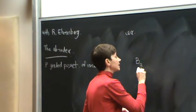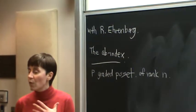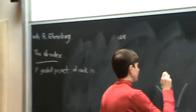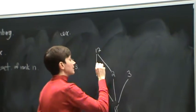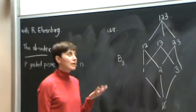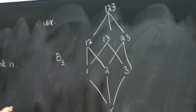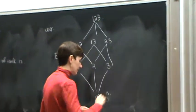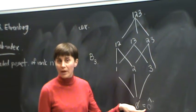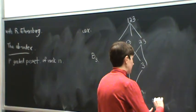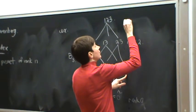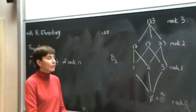We look at the Boolean algebra on three elements. This is going to be all subsets of the elements 1, 2, and 3, ordered by inclusion. On the bottom we have the empty set, then our singletons 1, 2, and 3, then subsets of size 2, and then of course the one subset of size 3. This is a poset that is ranked — meaning that the distance from any element to the bottom element is well-defined. So we have rank 0 elements, rank 1, rank 2, rank 3.